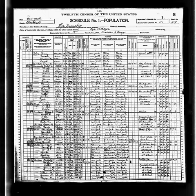Microdata from the 1900 census are freely available through the Integrated Public Use Microdata series. Aggregate data for small areas, together with electronic boundary files, can be downloaded from the National Historical Geographic Information System.